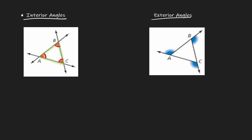What is one characteristic about this? Well, one property that we have when it comes to interior angles is that the sum of the angles is equal to 180 degrees. That is, if I look at the value for angle A, angle B, and angle C, that would always be equivalent to 180 degrees.